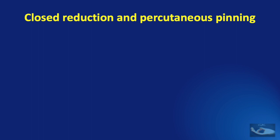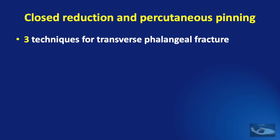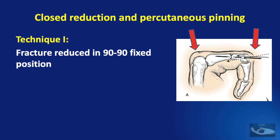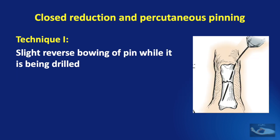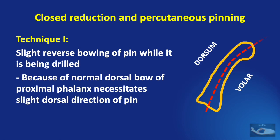If we are able to achieve a closed reduction of the fracture, it would be ideal to put in a wire percutaneously. There are three techniques available for transverse phalangeal fracture fixation with percutaneous pinning. In the first technique, the fracture is reduced in a 90-90 fixed position — fixing the metacarpophalangeal joint in 90 degrees and fixing the proximal interphalangeal joint in 90 degrees and compressing so that the fracture is fixed. A K-wire is introduced in the retrocondylar fossa of the proximal phalanx and driven proximally. A slight reverse bowing of the pin while drilling is necessary to give adequate stability in the normal dorsal bowing of the proximal phalanx.